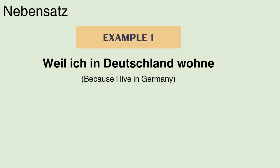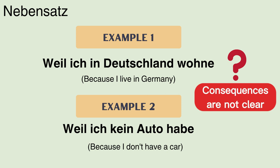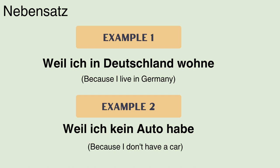Another example: 'Weil ich kein Auto habe' — 'Because I don't have a car.' After reading these sentences a question comes to mind: what are the consequences of not having a car, or what is the consequence if you live in Germany? These are questions left unanswered when we use the Nebensatz alone. This is the reason why a Nebensatz always comes with a Hauptsatz.